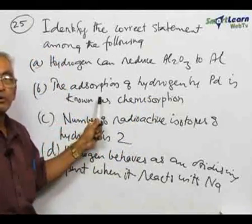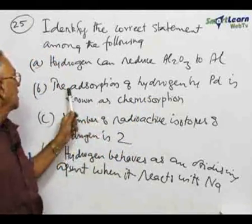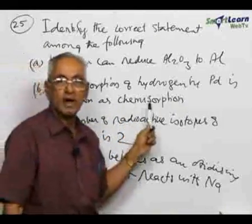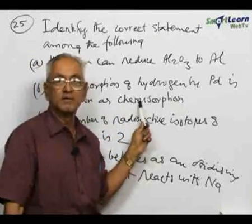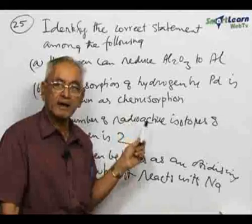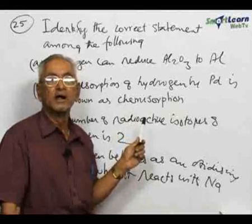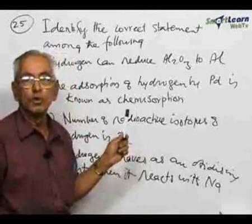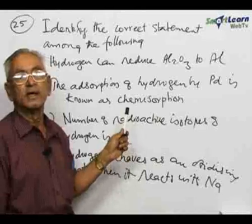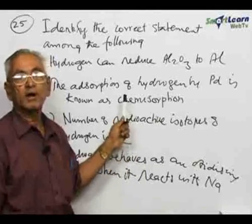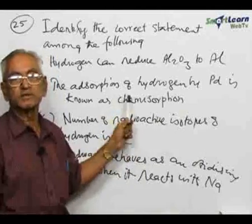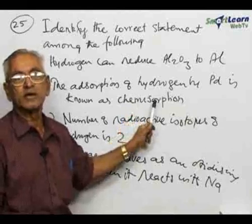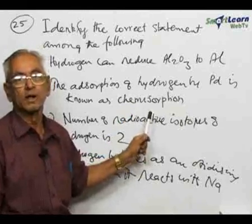Now let us come to statement two. The given statement is: absorption of hydrogen by palladium is known as chemisorption. That is also not correct because it is known as occlusion. Occlusion is a specific term used for this process — hydrogen is absorbed on the surface of palladium, but that is not chemisorption; it is occlusion.